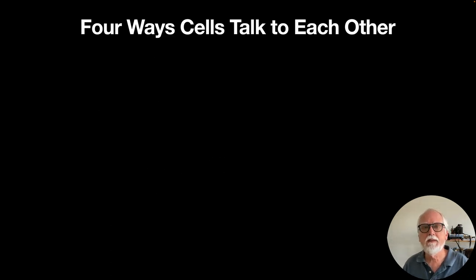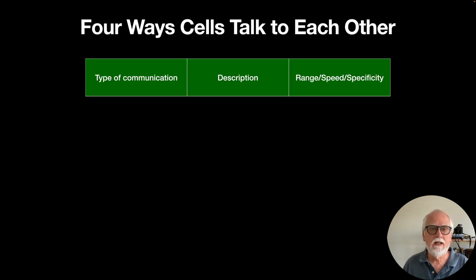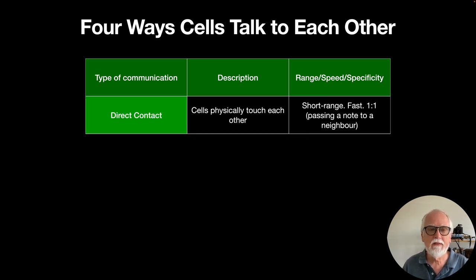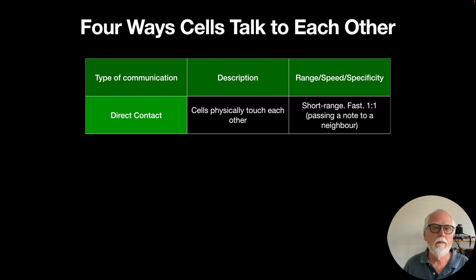Let's talk about four ways that cells talk to each other — cells anywhere in the body, not just neurons. We'll break this down by type of communication, and notice how these four ways differ in their range, speed, and specificity. One way is through direct contact: cells can physically touch each other, having their membranes touching. It's short range, fast, and very much like a one-to-one transmission — analogous to passing a note to a neighbor.